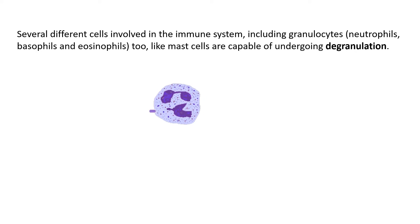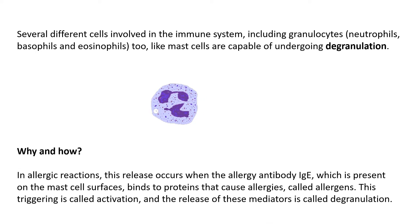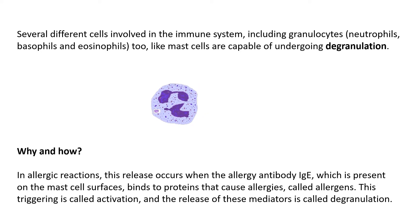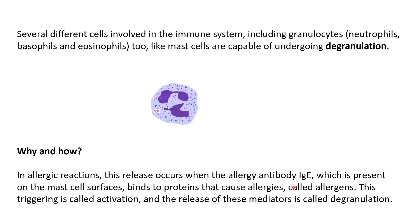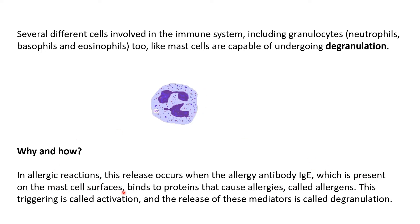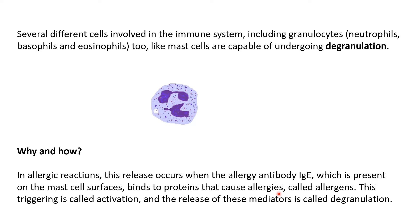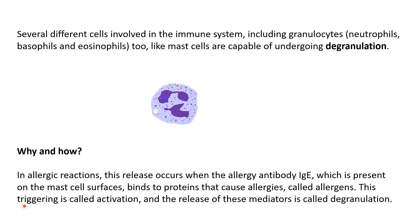So how and why? In an allergic reaction, this degranulation process occurs when the antibody IgE, which is present on the mast cell surface, binds to proteins that cause allergies called allergens. This triggering is called activation.